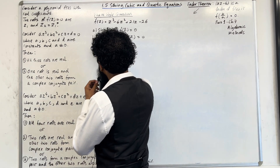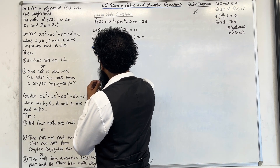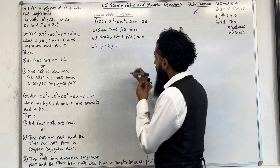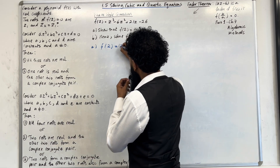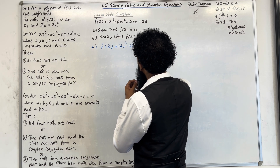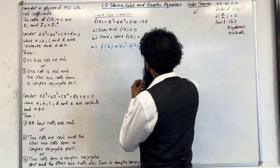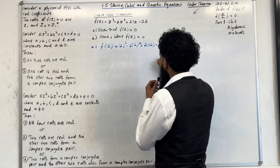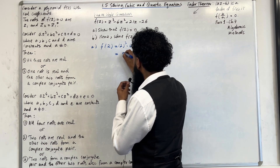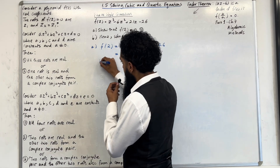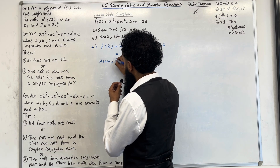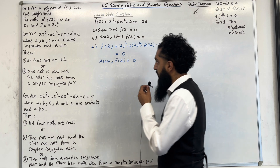In part A, we need to work out f(2) — replace the z's with 2, so we've got 2³ − 6 × 2² + 21 × 2 − 26. If I put this into my calculator, I get 0. Hence, I can conclude that f(2) = 0.